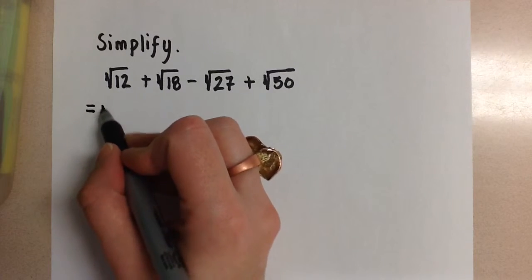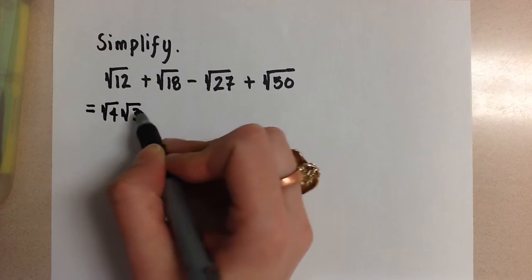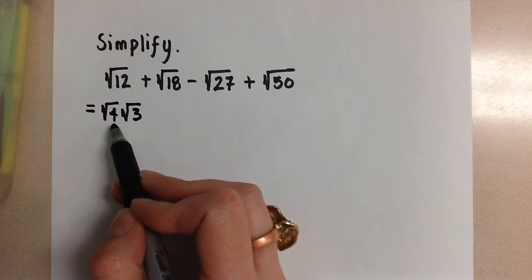So the root 12 can be broken down into root 4 and root 3. Remember our goal is always to break it down where one of the factors is a perfect square.